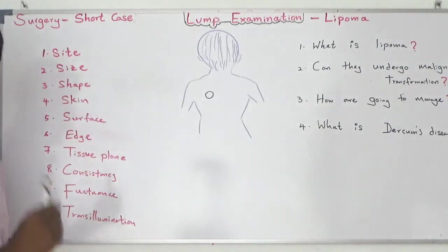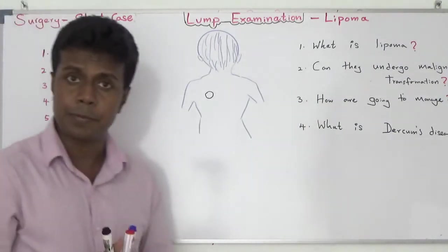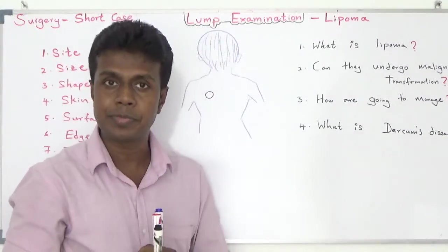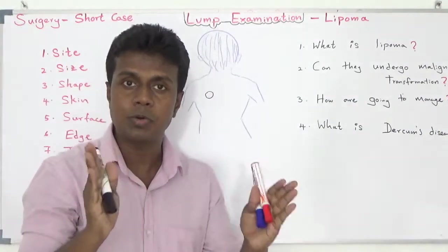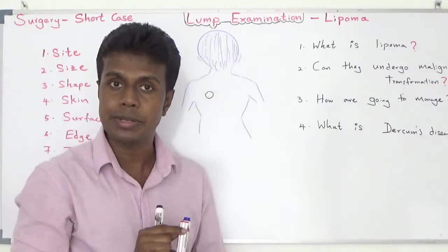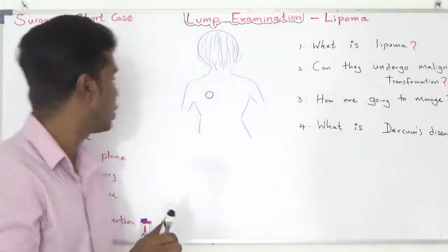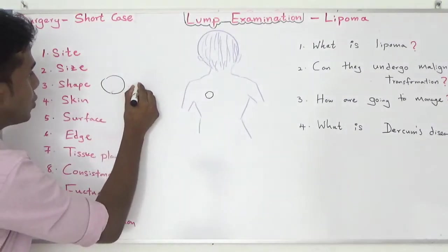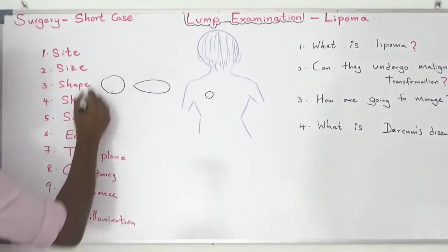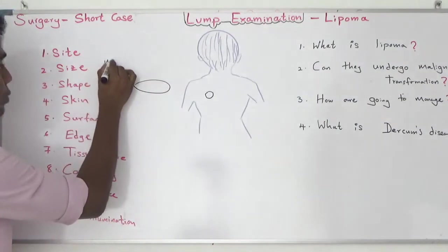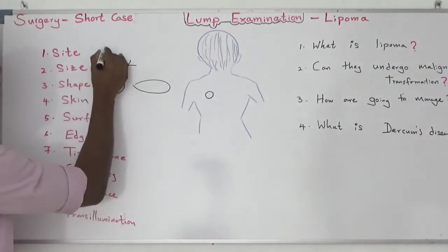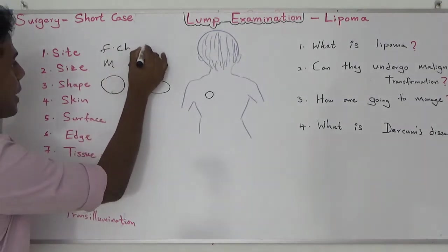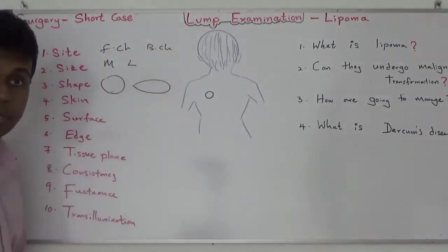Shape: Lipoma shape can be hemispherical or oval — any kind of shape — but most commonly hemispherical or oval. To summarize so far: site is front or back of the chest (most common), size is medium to large, shape is hemispherical or oval.